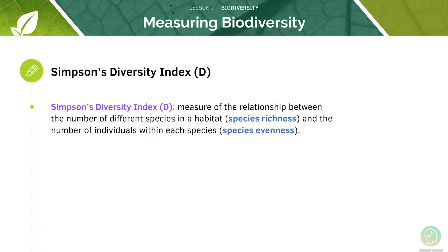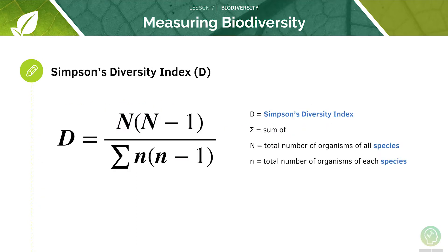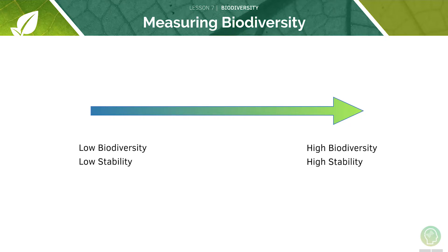Simpson's diversity index is a measure of the relationship between the number of different species in a habitat and the number of individuals within each species. It can be calculated using the formula shown here. A highly biodiverse and stable environment will have a high D value, indicating good biological health, whereas a non-biodiverse and unstable environment has a low D value, indicating poor biological health.